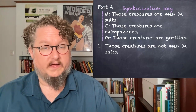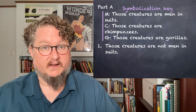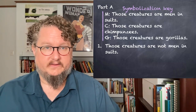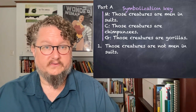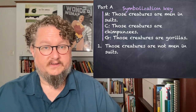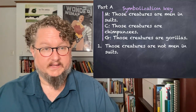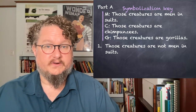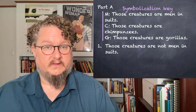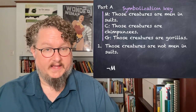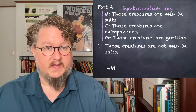The symbolization key is what allows us to move from English to SL or vice versa. It tells us what sentence letters we use to represent our atomic sentences. So let's look at this problem: M stands for 'those creatures are men in suits,' C for 'those creatures are chimpanzees,' G for 'those creatures are gorillas.' Our first one — 'those creatures are not men in suits' — is a pretty straightforward negation of M, so we use not-M.